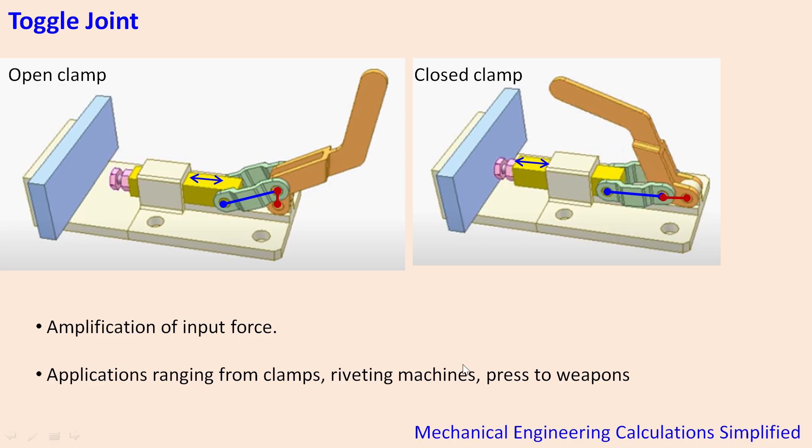And there are many applications of this mechanism like one that I've shown here, toggle clamp, and many like riveting machines, brake tools, and even weapons where a massive amount of force is required with application of small amount of force.